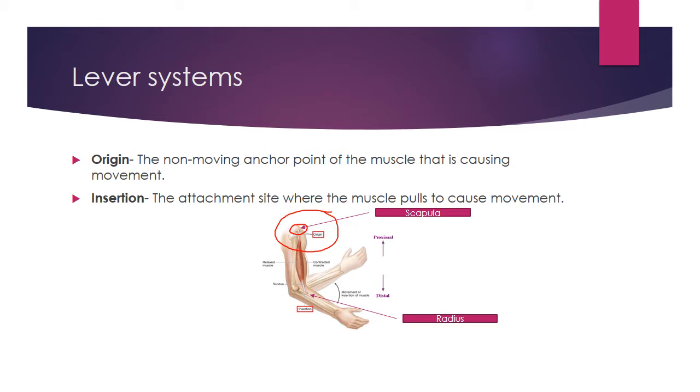Equally, we've got the insertion. So it's the attachment site where the muscle pulls to cause the movement. We can see here the biceps are also attached to the lower arm at the radius, and that is where the movement occurs. So when we do a bicep curl, the biceps contract, pulling upwards in this proximal direction, the lower arm.